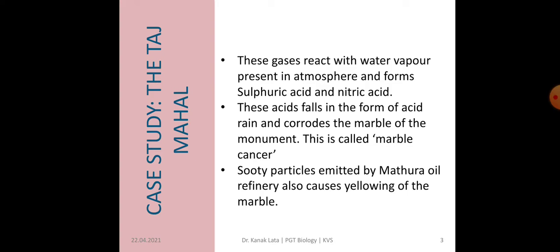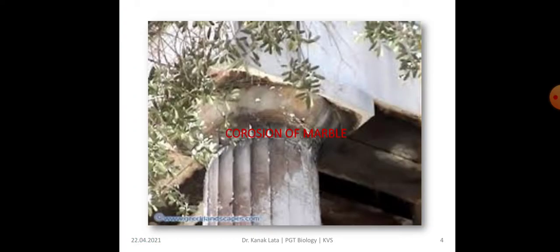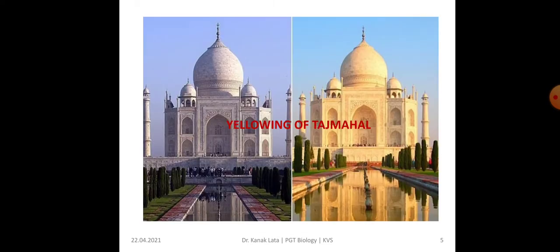This corrosion of marble is called marble cancer. From Mathura Oil Refinery, sooty particles are also emitted and these sooty particles cause yellowing of the marble. So day by day, our Taj Mahal is getting deteriorated by this acid rain as well as by these sooty particles. You can observe here the corrosion of marble and compare yellowing of marble of Taj Mahal.